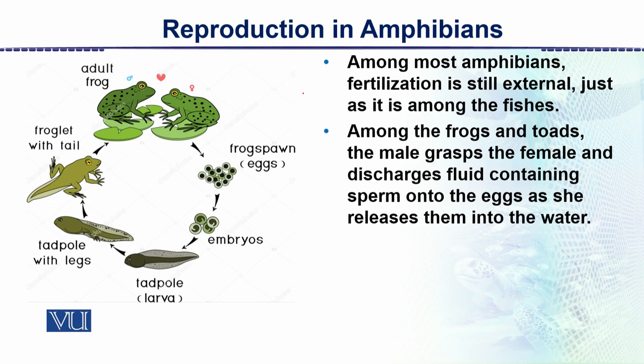The male sprays milt — that is, sperms along with secretions — onto the eggs, and the eggs are fertilized externally. The yolk is present on the eggs, and the eggs with yolk then begin larval development. The larvae start out very small and develop together.